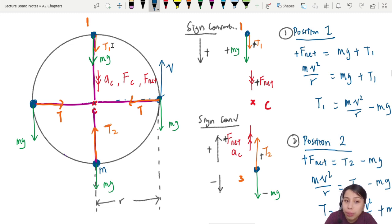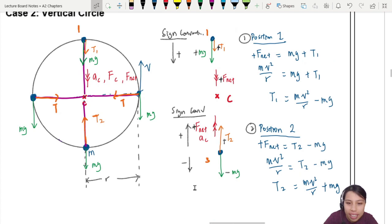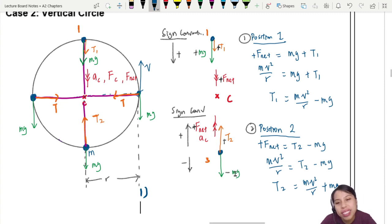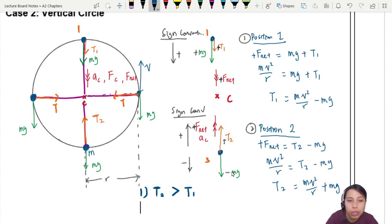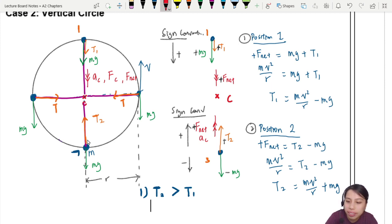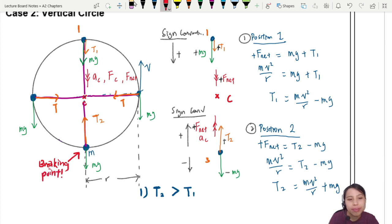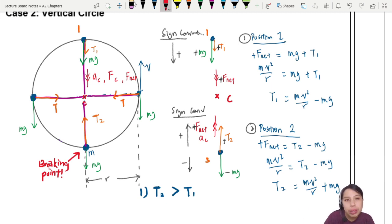Summarizing the three observations about the vertical circle. Observation one: at the bottom, tension has to fight against gravity, so T2 > T1. The string is tightest when the object is at the bottom, meaning the bottom is most likely where the string will break if you spin it faster and faster.